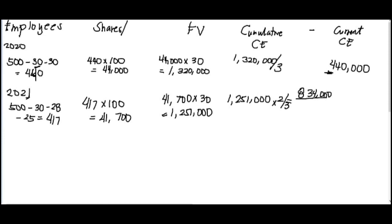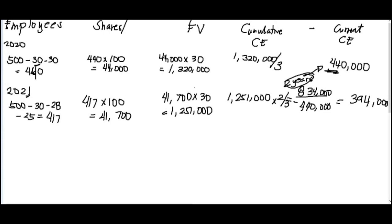Because the 834,000 is for 2 years, but you already recognized this. So that means, subtract 440,000 from 834,000. Your current compensation expense will be 394,000. Understand? What was done was compute for 3 years, but since two years have passed, this one is computed for 2 years, the estimate.